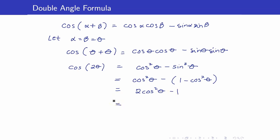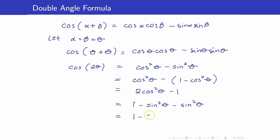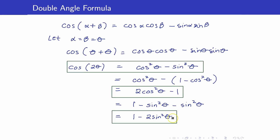Or we can also express this in terms of sine squared theta only. In that case, we write cosine squared theta as 1 minus sine squared theta, then copy minus sine squared theta. So it equals 1 minus 2 sine squared theta. Here are the three formulas and they are all equivalent to cosine of 2 theta.